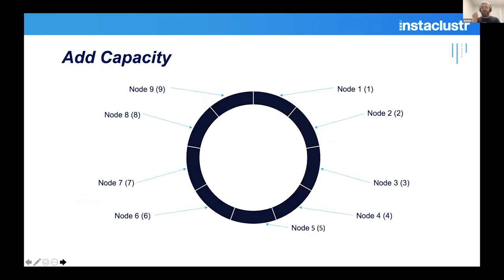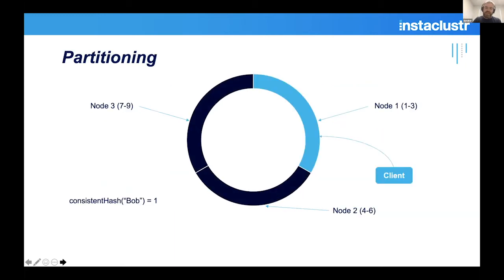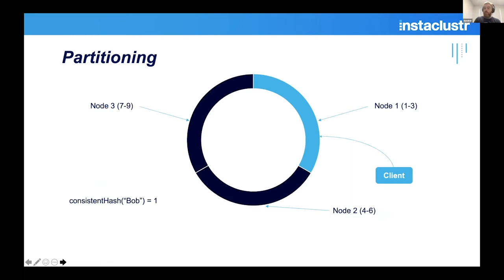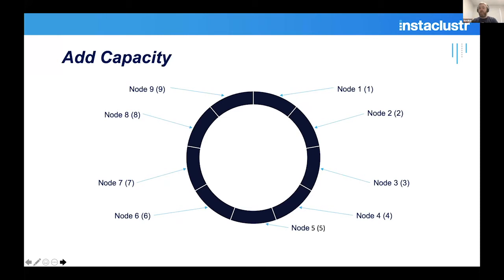This consistent hashing approach is also where Cassandra gets its linear scalability. With our three-node cluster, if we add six more nodes, we divide up the hash space further. Node one used to own tokens one, two, and three — now it only owns one, giving up the rest to the new nodes. With equally-sized servers, you now have more resources applied to a smaller proportion of the hash space, meaning more resources serving a smaller portion of your dataset. That's how you get linear scalability.